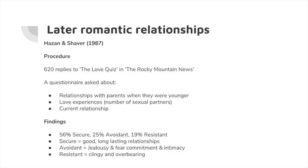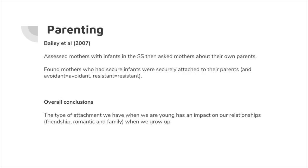Of those who answered the Love Quiz, 56% were found to have had a secure attachment when younger, 25% avoidant, and 19% resistant — roughly in line with Ainsworth, adding reliability. Those who reported a secure attachment when younger tended to have good, long-lasting romantic relationships and reported positive experiences of love. Avoidant individuals tended to have a fear of commitment and intimacy, were jealous, and had more sexual partners — more one-night stands — because they lacked intimacy and stayed independent. Resistant individuals were overly clingy and overbearing — texting all the time — and struggled to have romantic relationships. In terms of parenting, the Bailey study found continuity: whatever the parent's attachment type was with their own parents, that's what their infants were like. Secure mothers had secure infants, avoidant mothers had avoidant infants, resistant mothers had resistant infants — the continuity hypothesis. So overall, the type of attachment we have when young impacts our friendships at school, our romantic relationships, and our parenting styles.